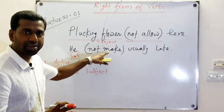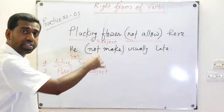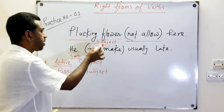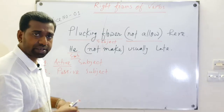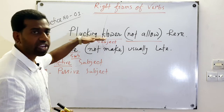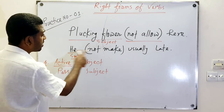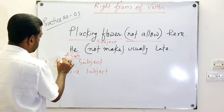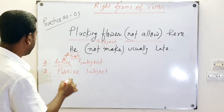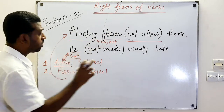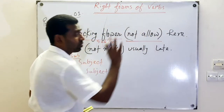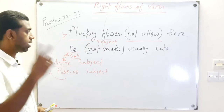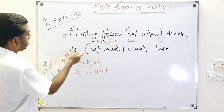But look at 'plucking flower — not allow here.' Do you think 'plucking flower' acts by itself? No. He does the work — 'plucking flower' doesn't do it. So subjects are of two types: active subject and passive subject. An active subject is like 'he' — a person who acts. A passive subject is like 'plucking flower' — it cannot allow or act on its own.